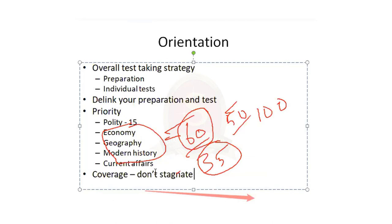Categorize your mistakes: unclear concept, overlooked a word, silly mistake. Give comments on the technicality — not academic knowledge, but where you technically failed. After analyzing all questions, write on the first page what your major mistake pattern is: overlooking words, misunderstanding questions, or leaving options. Before the next test, read that. Your wrongs will not be repeated because we repeat wrongs when we fail to document them. Great civilizations documented their faults — that's how they progressed. Likewise, document your technical mistakes.